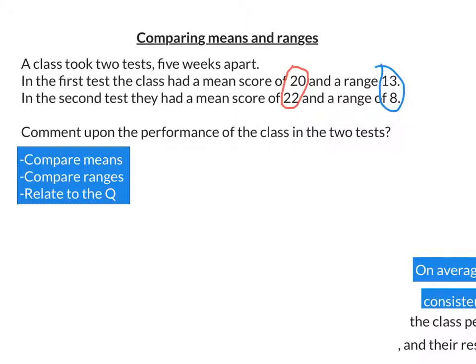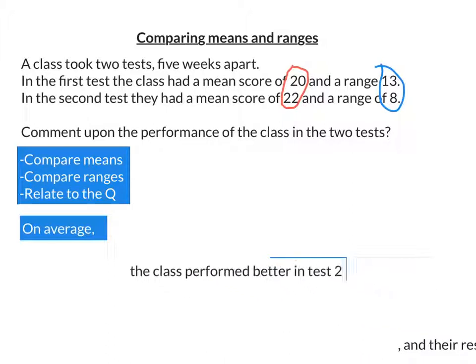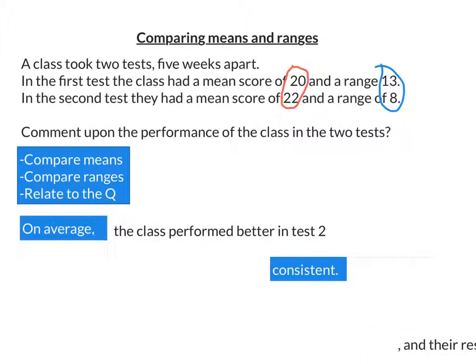Now, when I'm structuring my reply on these sort of questions, I always start with on average and then talk about the averages. And then I end with consistent after a sentence about the range. So on average, the class performed better in test two as the mean is now higher.